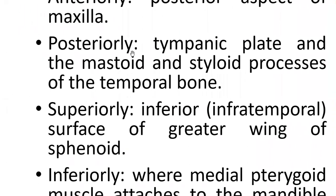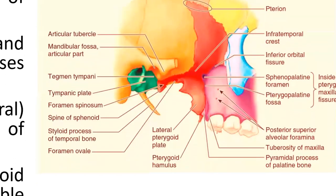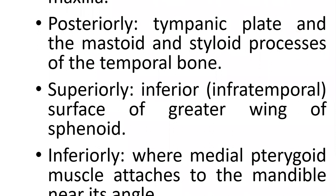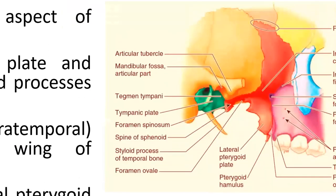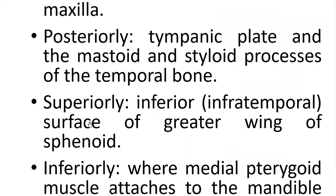Anteriorly lies the posterior aspect of the maxilla. Posteriorly lies the tympanic plate, the mastoid process, and the styloid process of the temporal bone. Also present posteriorly is the spine of the sphenoid.